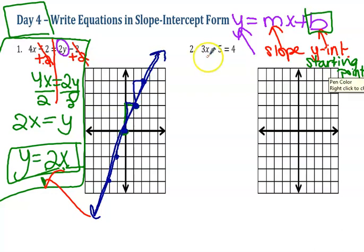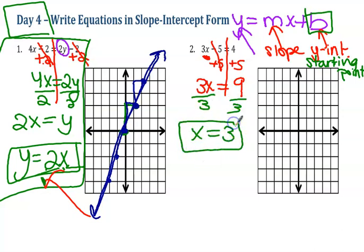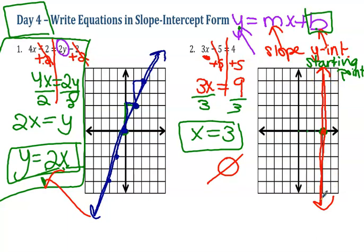Number two: there is no y value, so I need to solve for x. I add five to both sides because that is my constant, and I get 3x equals 9. The opposite of multiplying is dividing, and I get x equals 3. So I go over to x equaling 3. I don't have a y, I don't have a b — this is called an undefined slope. It's a vertical line at x equals 3.